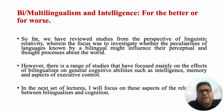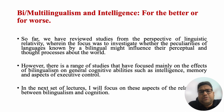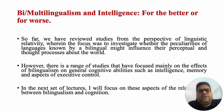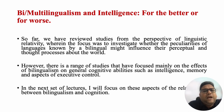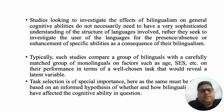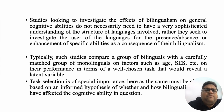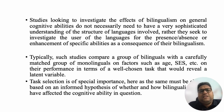So far we've reviewed studies from the perspective of linguistic relativity, wherein the focus was to investigate whether the peculiarities of languages known by a bilingual might actually influence their perceptual and thought processes. However, there has also been a range of studies that have focused mainly on the effects of bilingualism on general cognitive abilities such as intelligence, memory, aspects of executive control, emotion, and so on. Studies looking to investigate the effects of bilingualism on general cognitive abilities do not necessarily need a very sophisticated understanding of the structure of the languages involved; rather they seek to investigate the user of the languages and the presence, absence, enhancement, or detriment in these specific abilities as a consequence of their bilingualism.